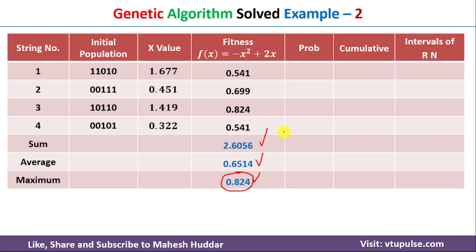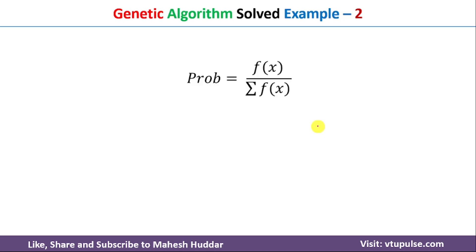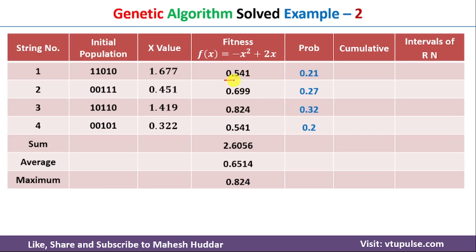Now we apply crossover to maximize the function value. First we calculate the selection probability for each chromosome using P(x) = f(x) / Σf(x). The sum of all fitness scores is 2.6056. For the first chromosome: 0.541 / 2.6056 = 0.21. For the second: 0.699 / 2.6056 = 0.27. Similarly, probabilities are calculated for the third and fourth chromosomes.